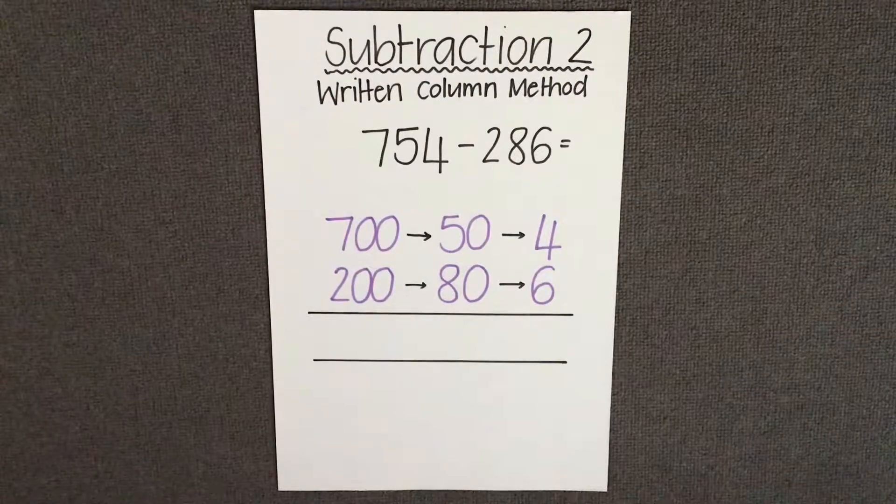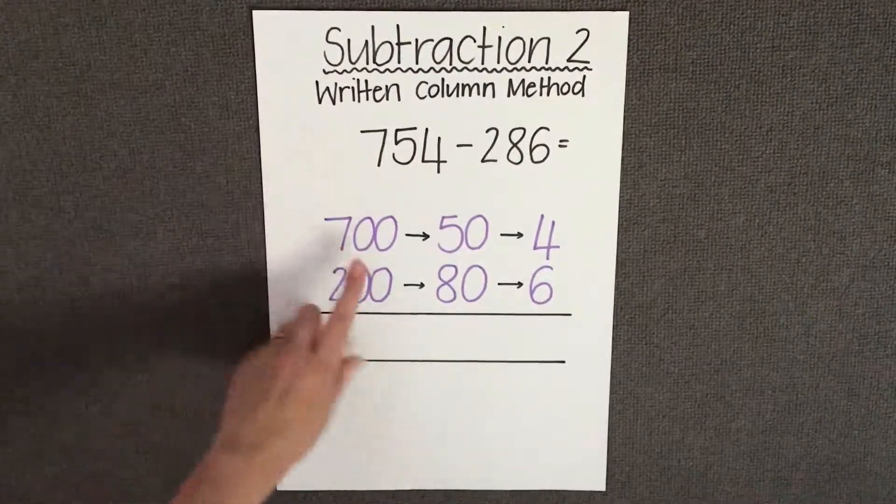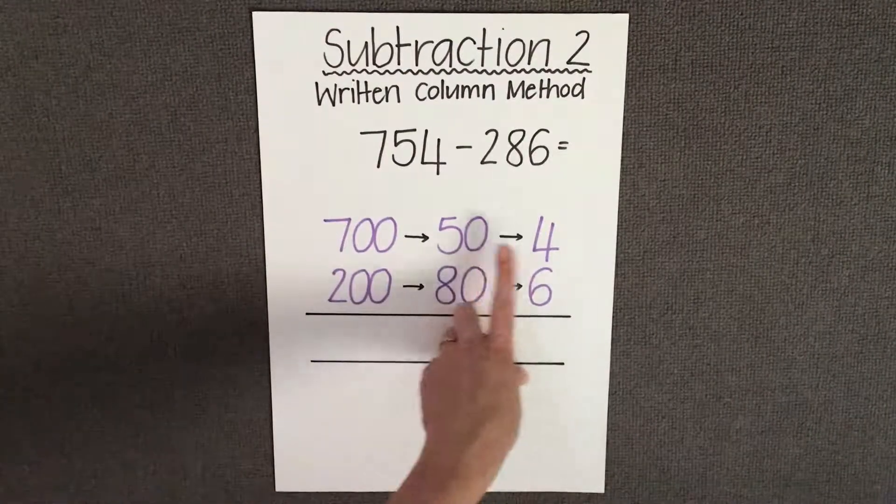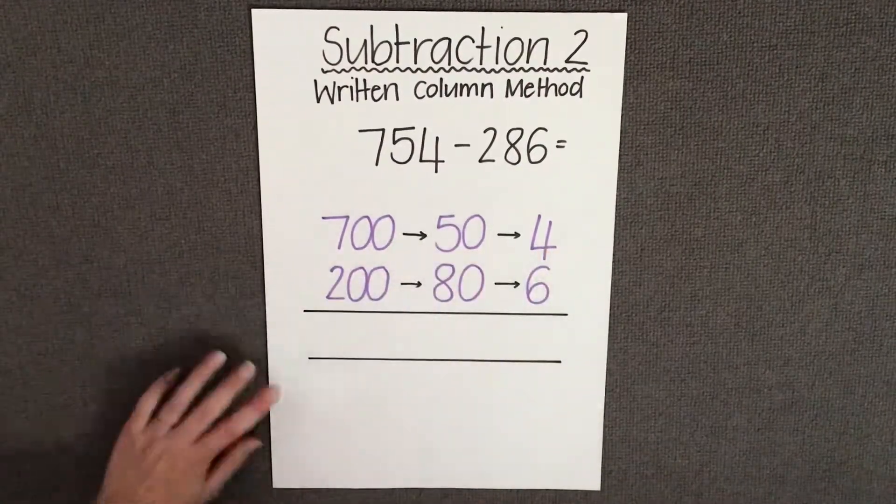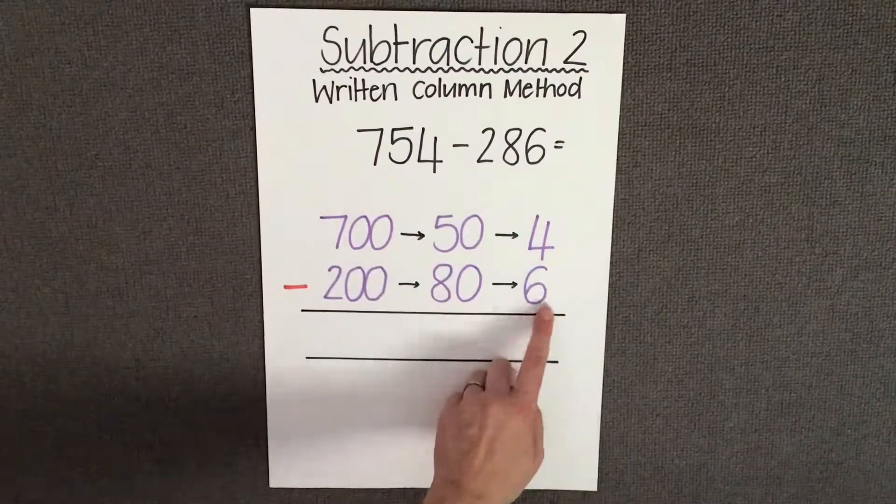We begin by setting out our algorithm using partitioning. In the number 754 I have 700, 50 and 4 ones, and I'm going to take away 200, 80 and 6 ones.